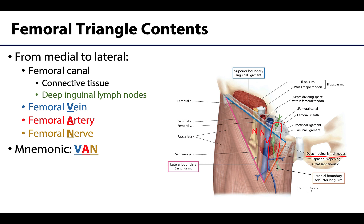A useful mnemonic for remembering the order of these structures from medial to lateral is VAN: Vein, Artery, Nerve. You may also see the mnemonic NAVEL in some study guides like First Aid, which goes in the reverse direction — lateral to medial — indicating: Nerve (most lateral), Artery, Vein, Empty space of the femoral canal, and Lymphatics.